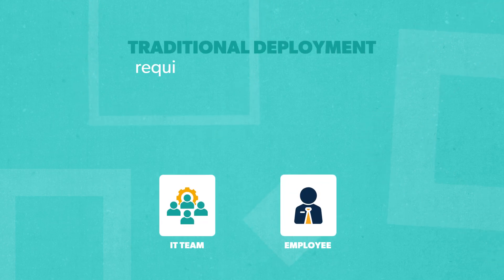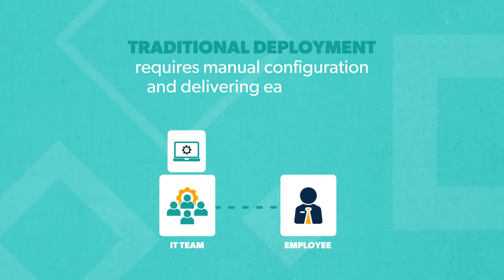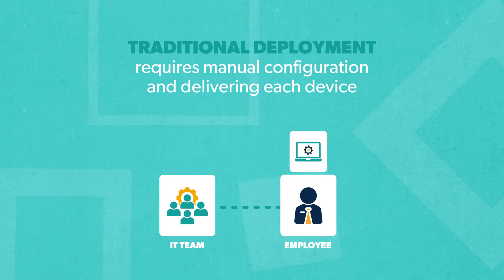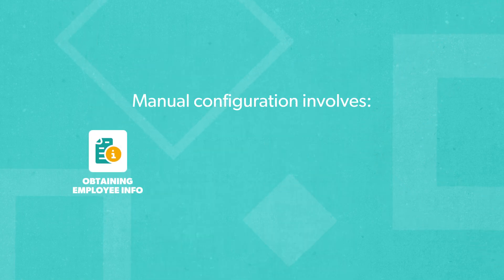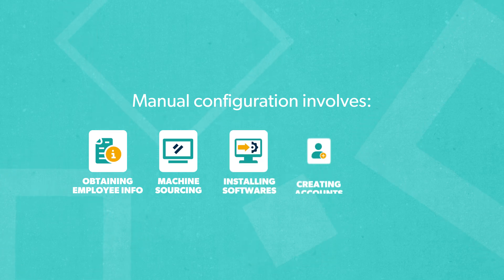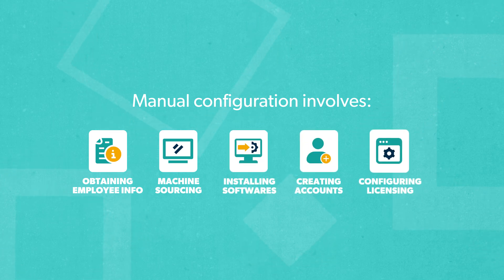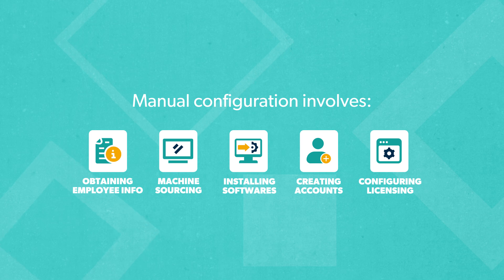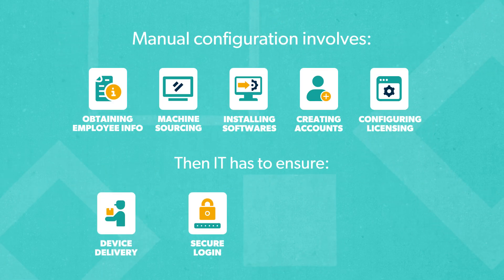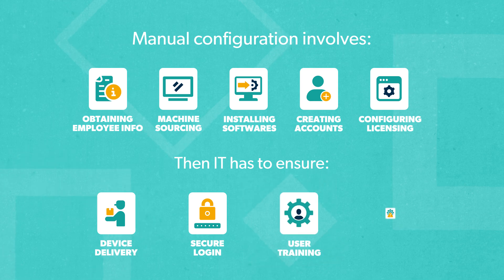Traditional deployment requires IT teams to manually configure each device, then deliver it to the user. That means obtaining employee information, ordering machines or pulling them from storage, installing software and creating accounts, then configuring licensing for each user. After all that, IT has to make sure the user gets the device and logs on securely, followed by training and troubleshooting.